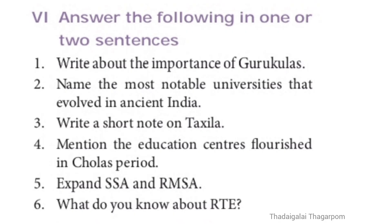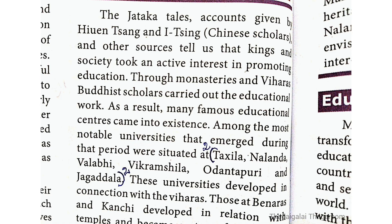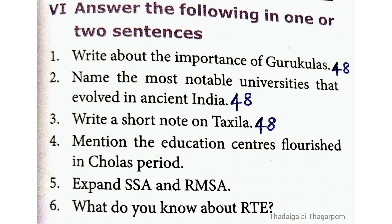Short answer, Question 2: Name the most notable universities that evolved in ancient India. The answer is on page 48. The notable ancient universities were: Takshashila, Nalanda, Valabhi, Vikramshila, Odantapuri, and Jagadala.